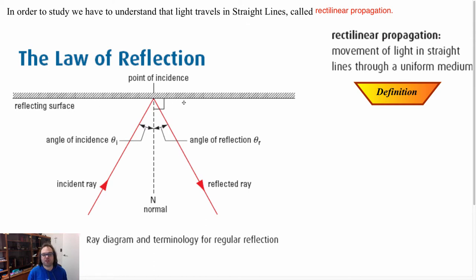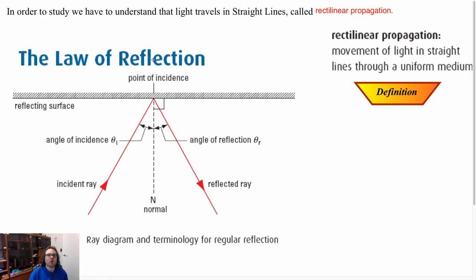Here I have a plane, a reflective surface, and a light ray. The place where that specific ray hits the surface is called my point of incidence. We always have a perpendicular line from the surface at the point of incidence, which is going to be called my normal. We have two angles here: the angle of incidence and the angle of reflection. These must always be equal.